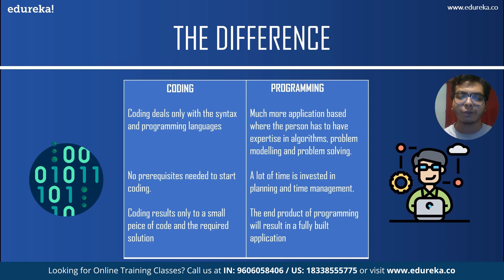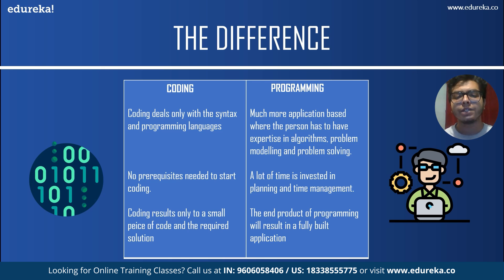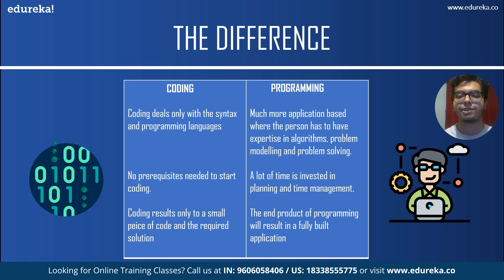If you want to start coding, you don't need prerequisites, whereas in programming you have to invest a lot of time in planning and time management throughout the entire application development process. Coding results in only a small piece of code that gives a certain solution, but the end product of programming is a fully developed application. Programming is a very large process compared to coding, which is just a part of it.